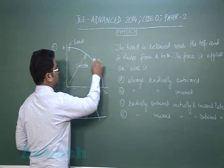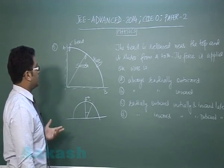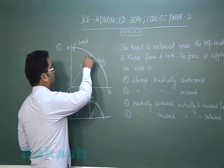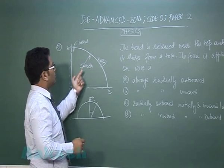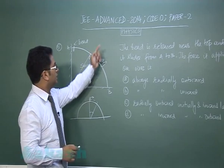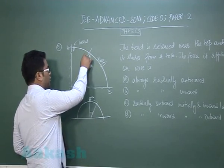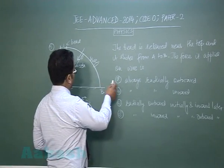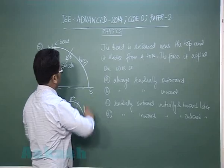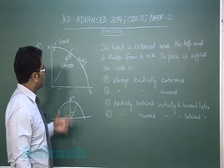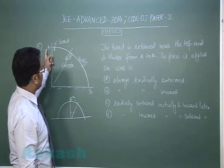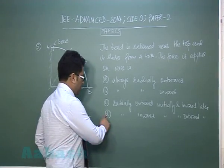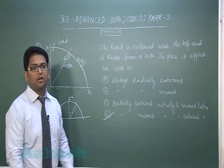In this situation, you can see that initially the bead gets a normal reaction directed upward (radially inward from the wire's perspective), meaning the bead pushes the wire radially inward. Later, the direction reverses and the force becomes radially outward. So the force on the wire is initially radially inward and then radially outward. This corresponds to option D.